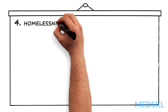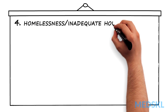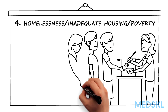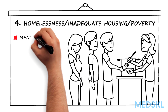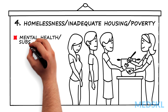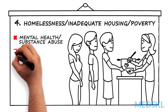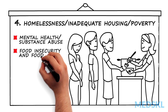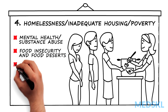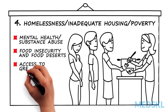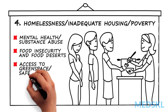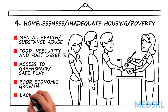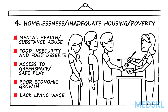Homelessness and inadequate housing and poverty issues might include mental health and substance abuse, food insecurity and food deserts, access to green space and safe play, poor economic growth and opportunity, and the lack of a living wage.